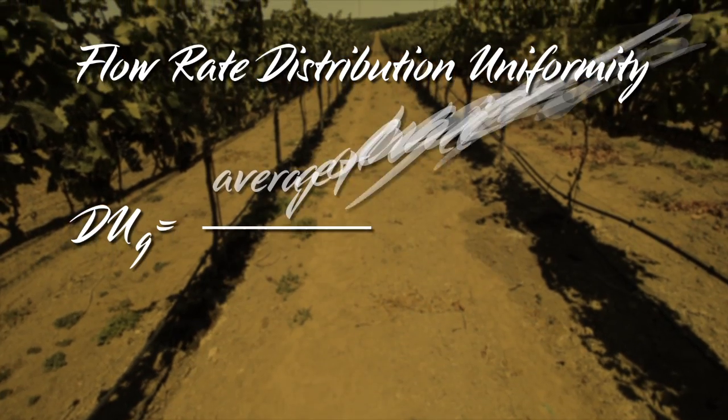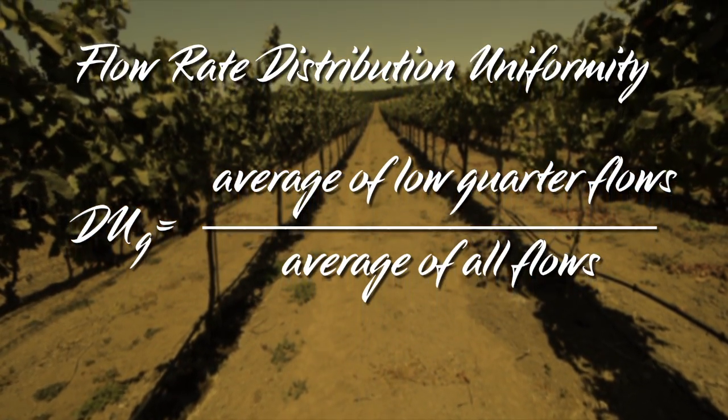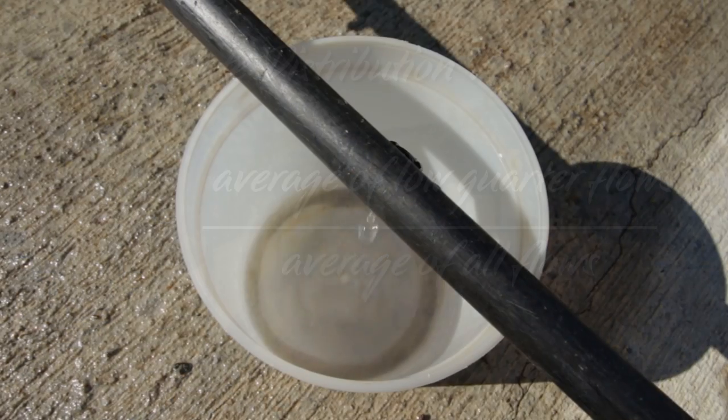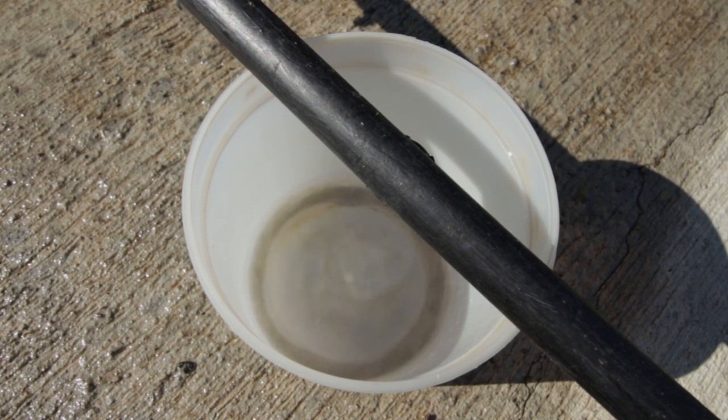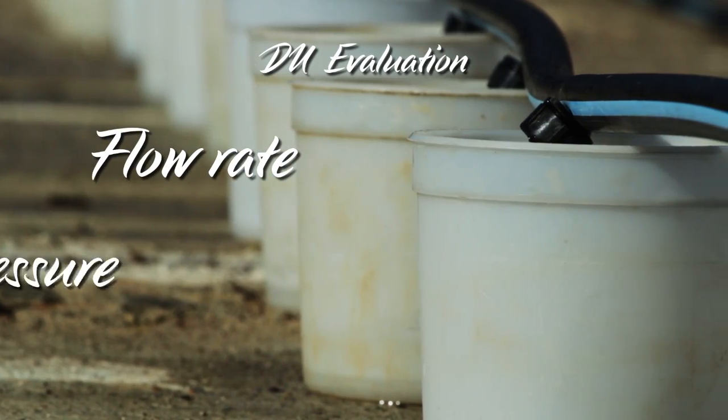Distribution uniformity, or DU, is a mathematical expression that quantifies differences in the amount of water plants receive throughout a field. A simple test can be conducted on drip hose to evaluate DU. This evaluation measures both flow rate and pressure.